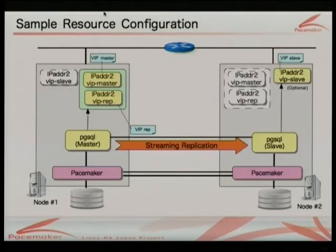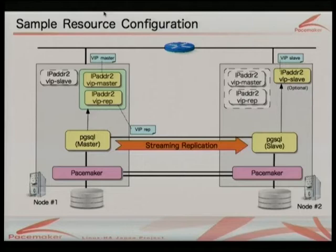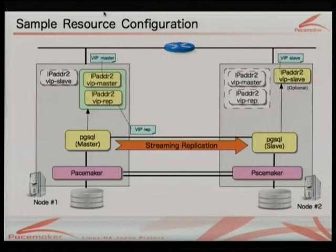This is the resource configuration for pacemaker. Usually a pacemaker cluster requires a filesystem resource agent or IP address resource agent. But in streaming replication, you only need virtual IPs. You need at least two virtual IPs on the primary side: one, vip-master, for answering client queries, and another, vip-replication, for the PostgreSQL replication link. Optionally, if you want load balancing for read-only queries, you can add another IP address, vip-slave, on the standby side. If you don't need load balancing, you can remove this.